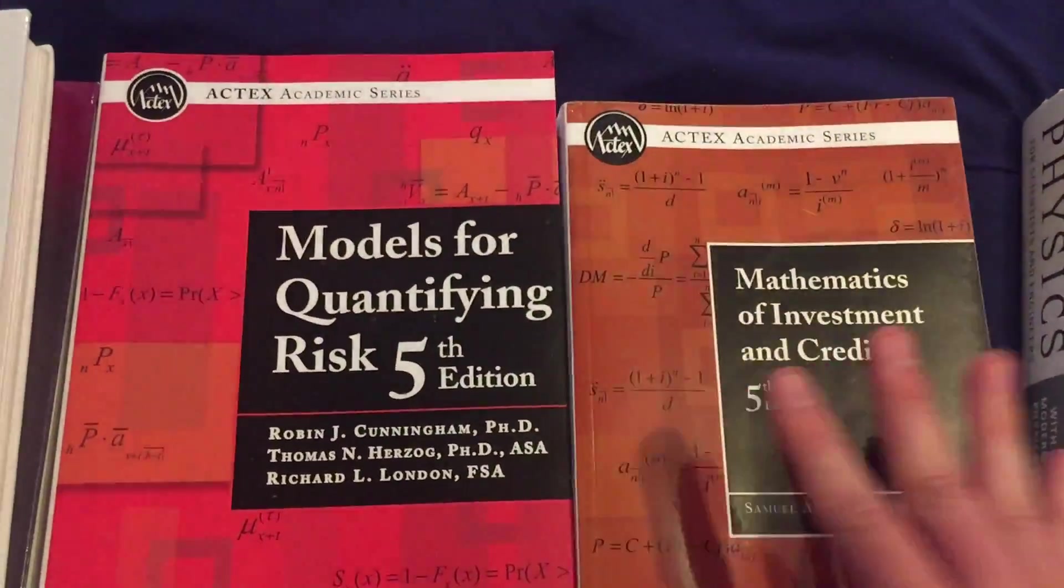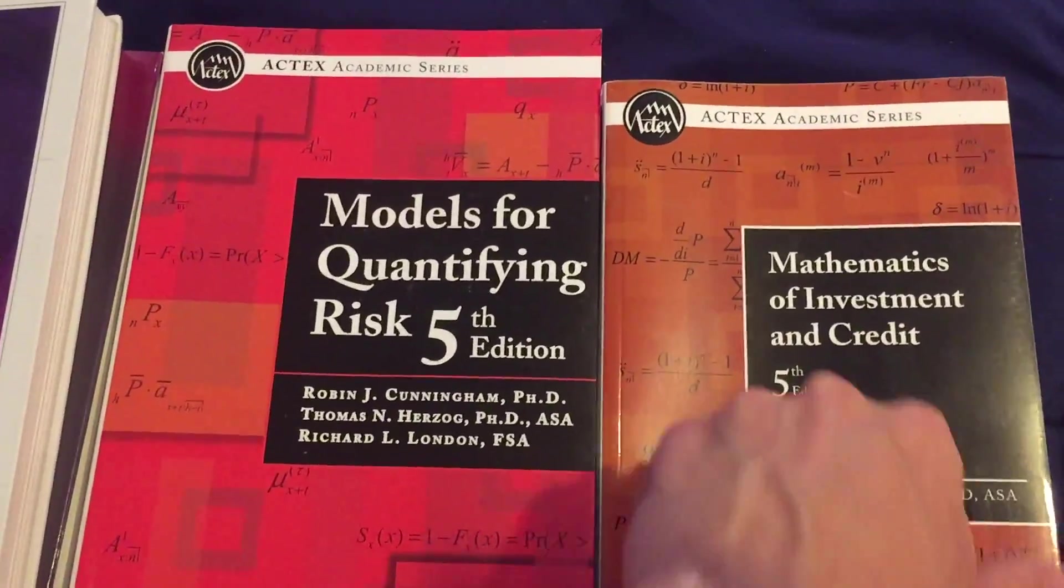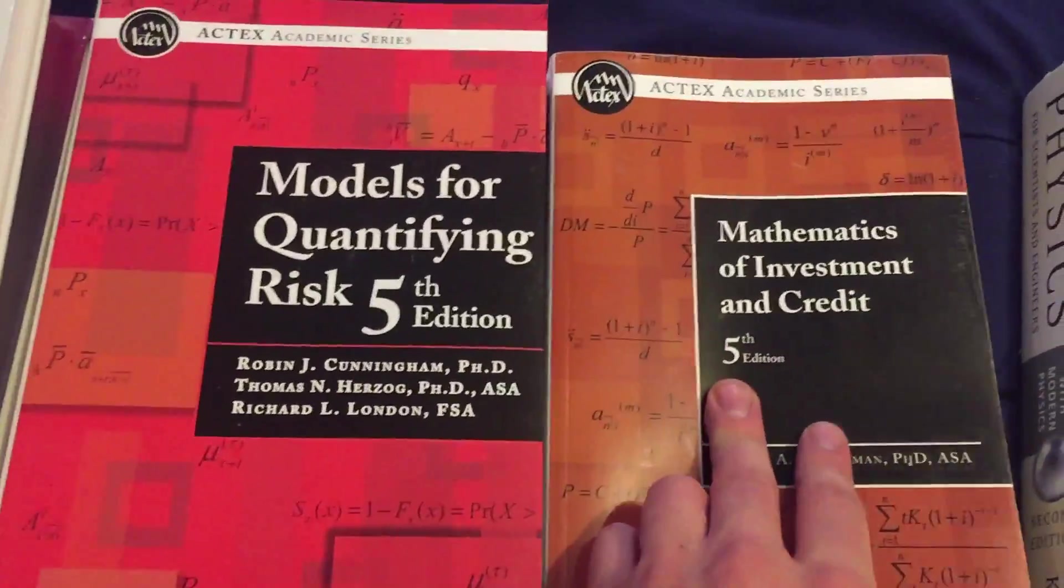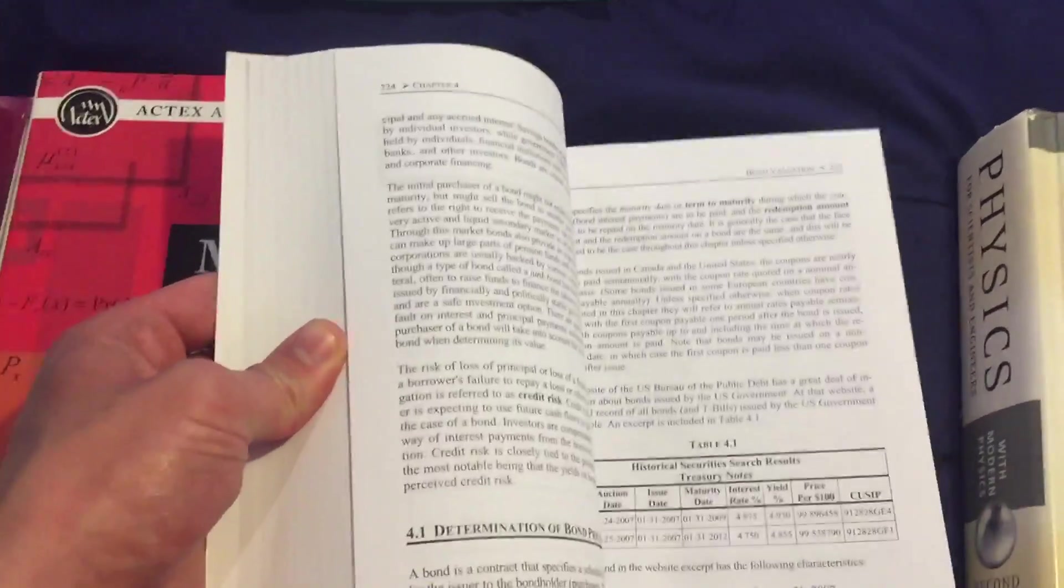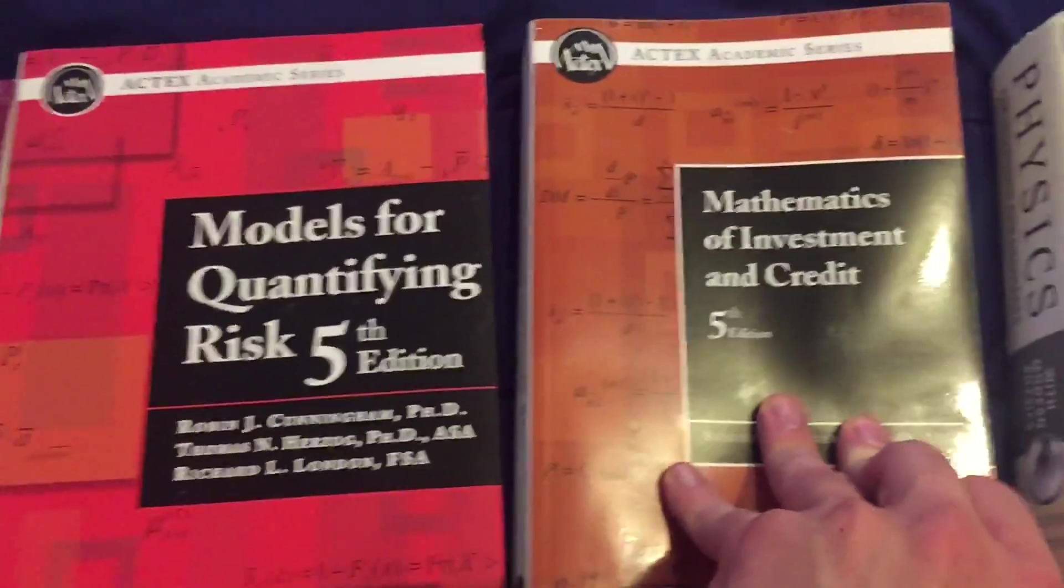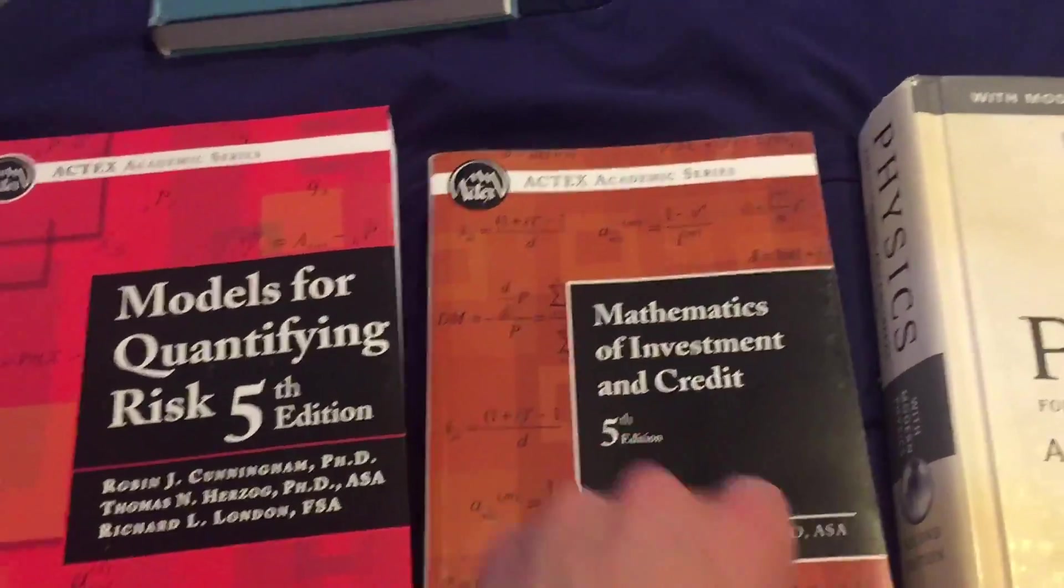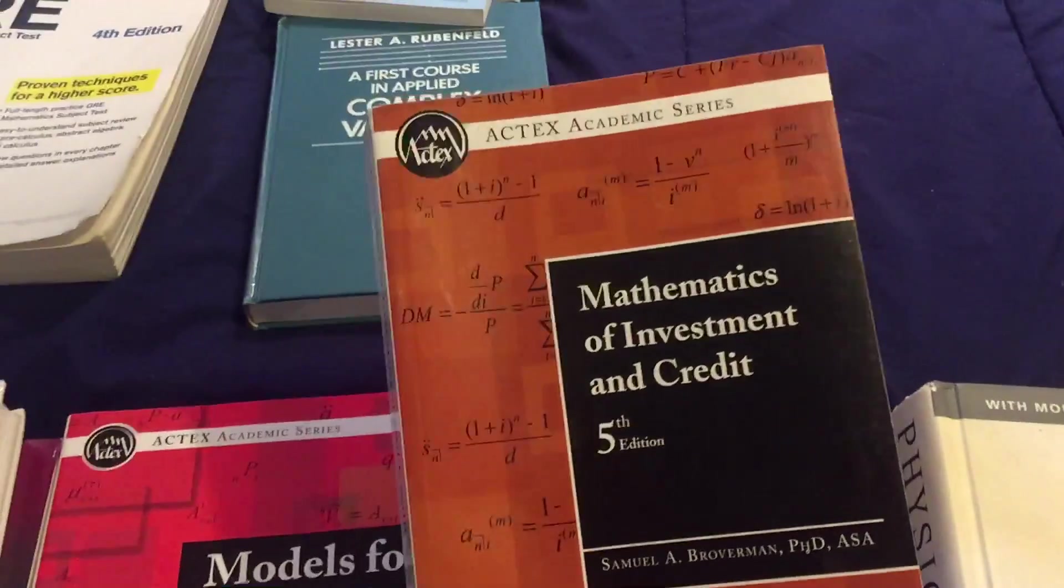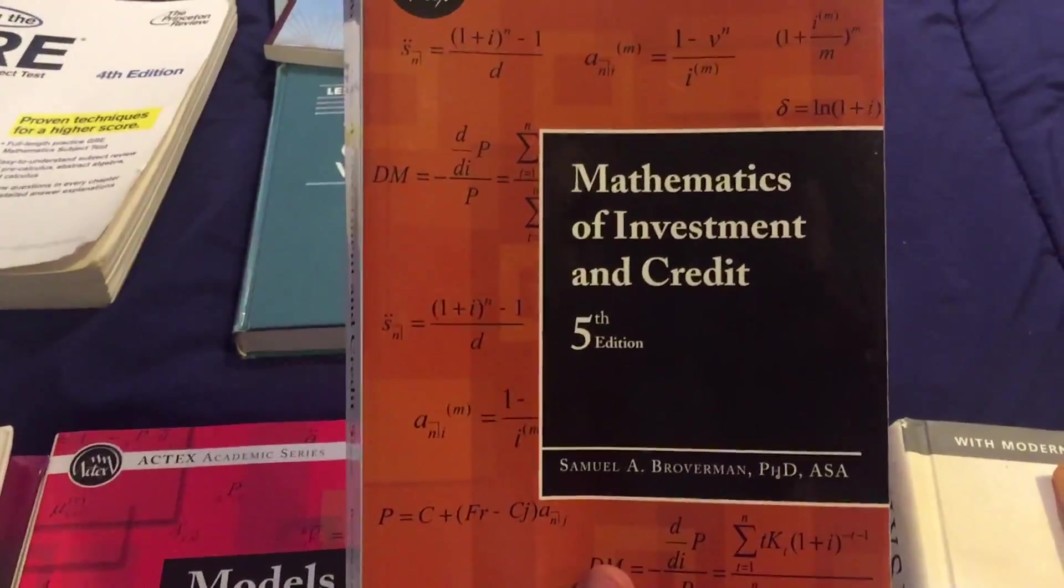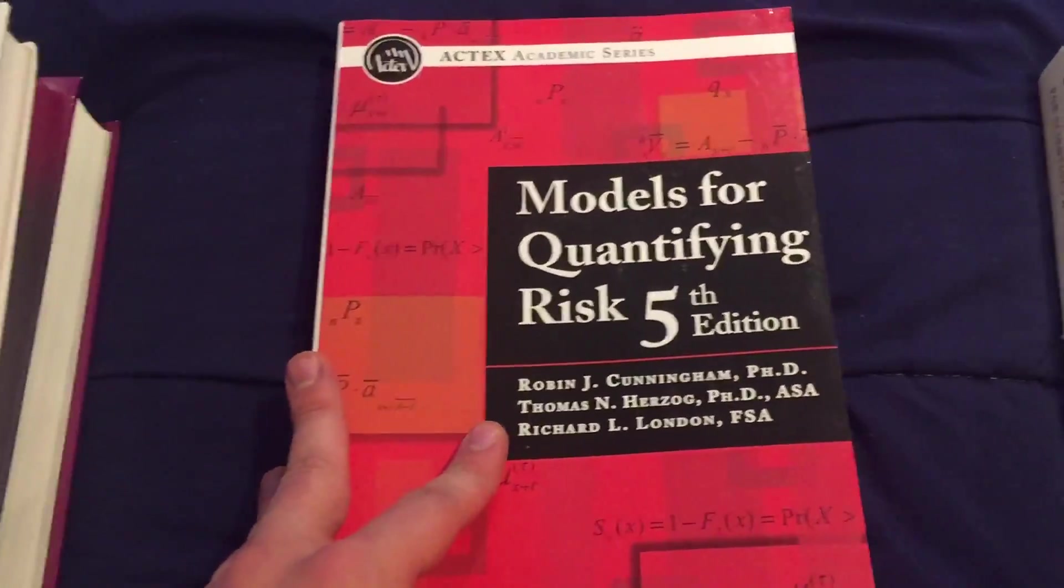Some of you might know that I was also an actuarial science major in addition to a math major. So these two books were for the actuarial exams. If you know anything about being an actuary, you have to take a number of exams to get your certification. And this book right here, Mathematics of Investment and Credit, this was one of the books that I used to study for the FM financial mathematics exam, which I passed on my third try. That was frustrating. This was a decent book. If you're studying for the actuarial exams, I would recommend just to use the study manuals. They're a lot more helpful, a lot more geared toward just taking the exam.